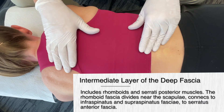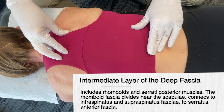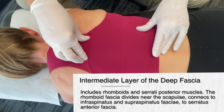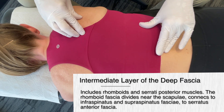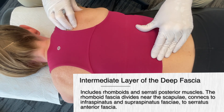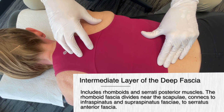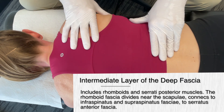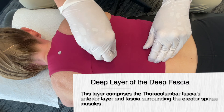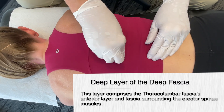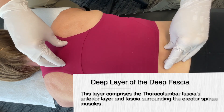Getting a little deeper, we get to the intermediate layer of fascia of the back. The intermediate layer includes the rhomboids and the serratus posterior superior muscles. The rhomboid fascia divides near the scapula, with a superficial layer connecting into some of the rotator cuff muscles — the infraspinatus and the supraspinatus fascia — way up on the shoulder. So we're starting to see how all of these things connect, including in the deep layer, the serratus anterior fascia. The deep layers comprise the tensor fascia lata anterior layer and the fascia around the erector spinae muscles.